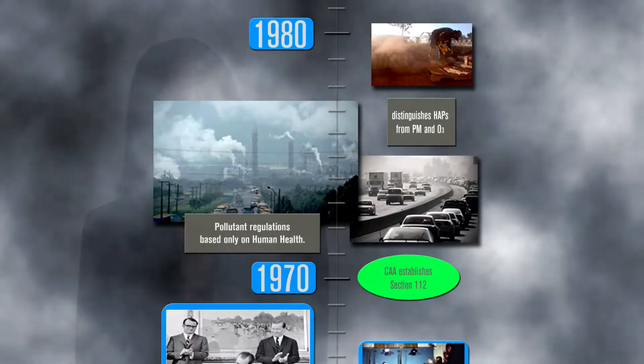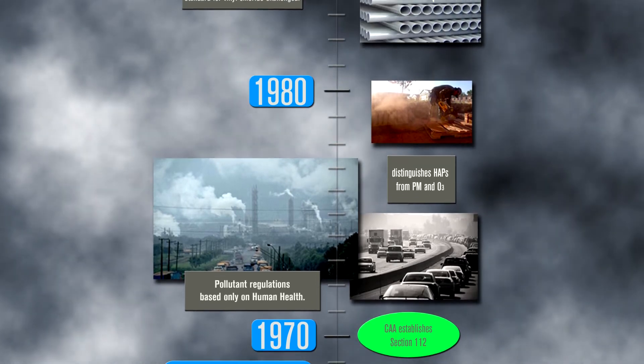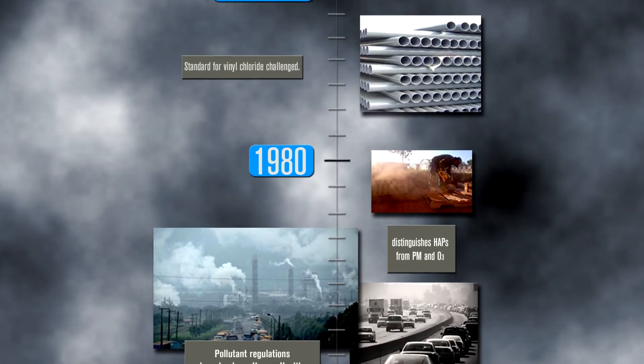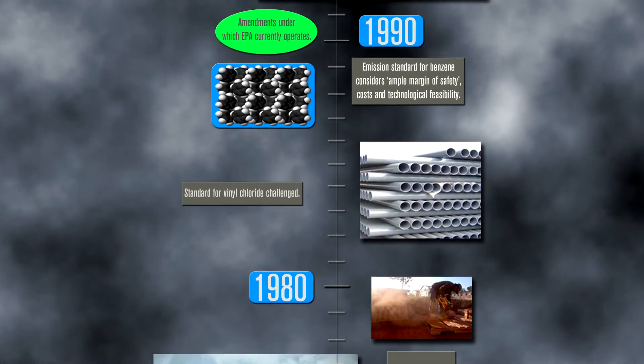EPA had to identify the HAPs one by one, then regulate based on the ample margin of safety outlined in the Benzene Rule. The agency was poised for failure. Fortunately, Congress recognized this problem and passed a new set of amendments to the Act that was signed into law in 1990.